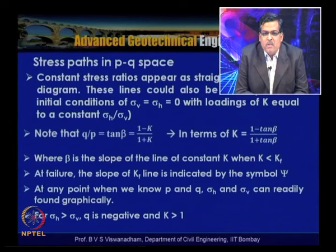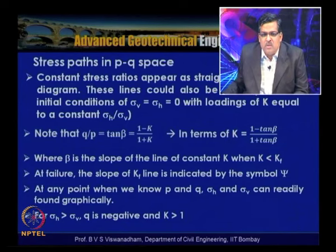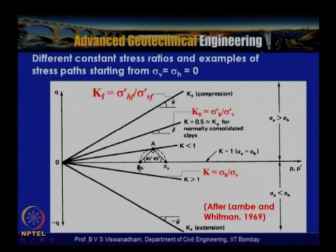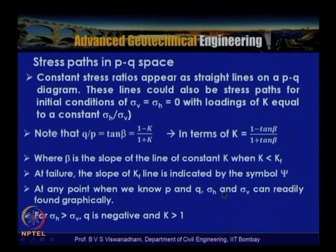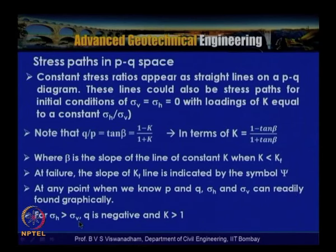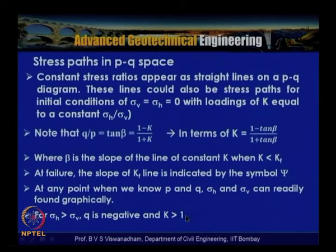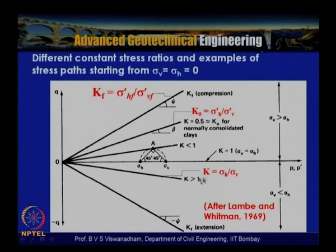At any point where p and q are known, σh and σv can be found graphically by drawing 45-degree lines. When σh > σv, q is negative and K > 1, indicating an over-consolidated state. When K < 1, this indicates the normally consolidated state.